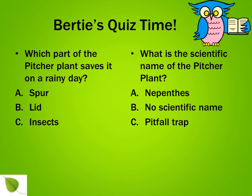Here are two more questions. Which part of the pitcher plant saves it on a rainy day? A: spur. B: lid. C: insects. What is the scientific name of the pitcher plant? A: Nepenthes. B: there is no scientific name. C: pitfall traps.